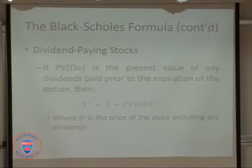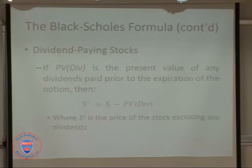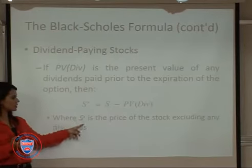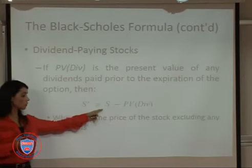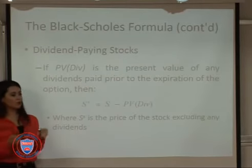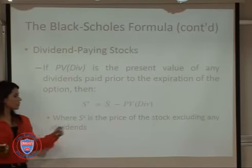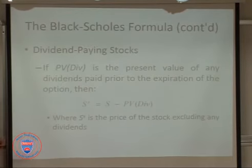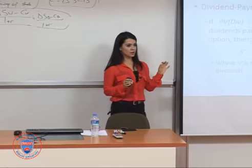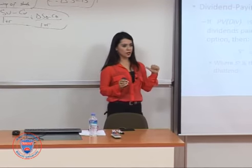Now I will show you one example of what we're going to do if we have dividend-paying stocks. Basically, we're going to calculate the stock price considering the dividend payment — we're going to calculate the present value of the dividend payment and make adjustments by decreasing the present value of the dividend payment from the stock price.